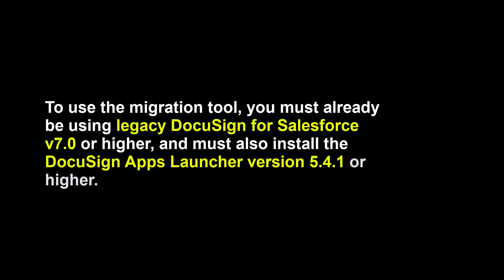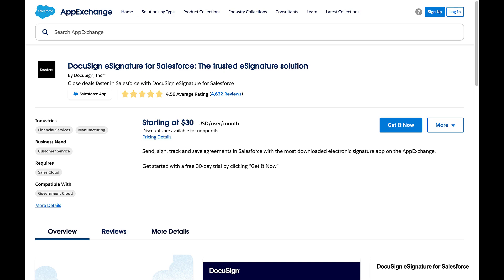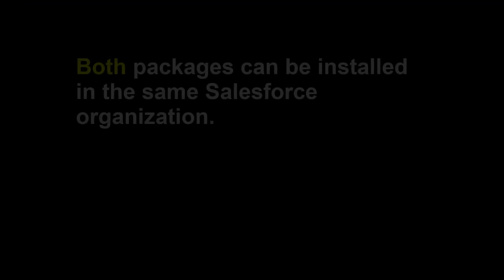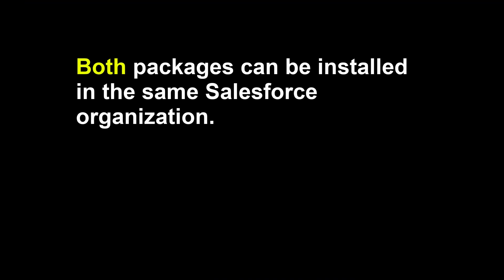Simply select the checkbox next to each item you wish to migrate, then finalize by clicking the Migrate button. To use the migration tool, you must currently be using the Legacy DocuSign for Salesforce Managed Package version 7.0 or higher. You must also install and configure the DocuSign Apps Launcher Managed Package version 5.4.1 or higher, which is available to download through the Salesforce AppExchange. It's also worth noting that these are separate managed packages that can be installed, configured, and functional within the same Salesforce organization without conflict.